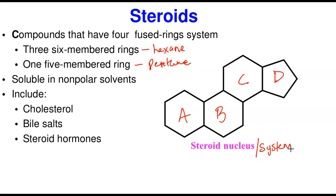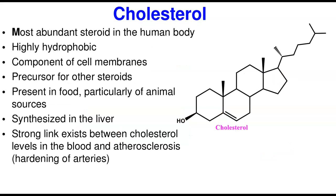The major classes of steroids we are going to be looking at include the cholesterol, the bile acids, and the steroid hormones.